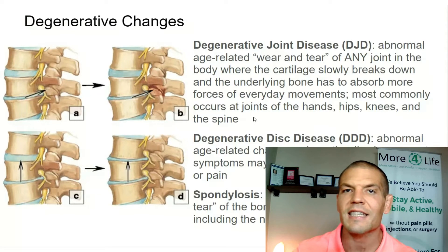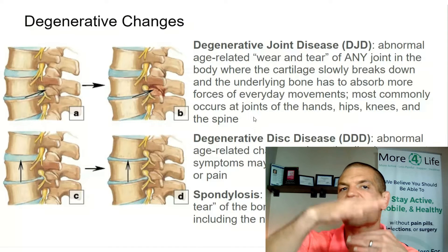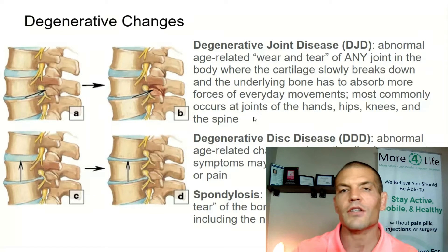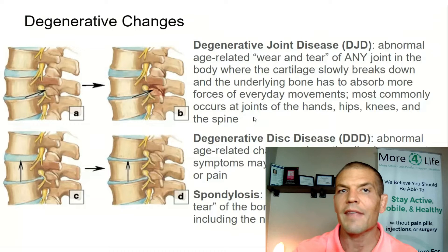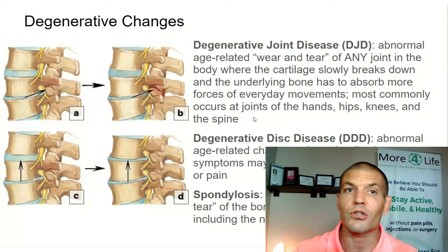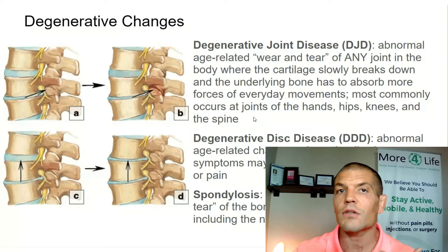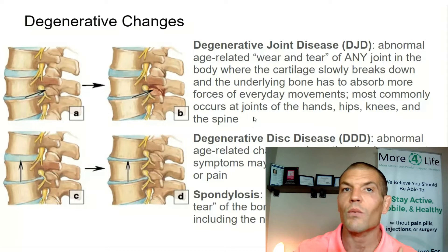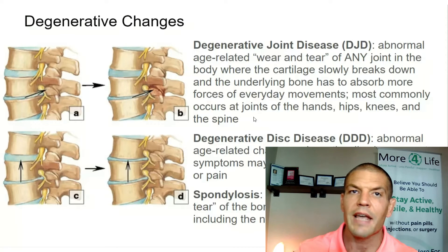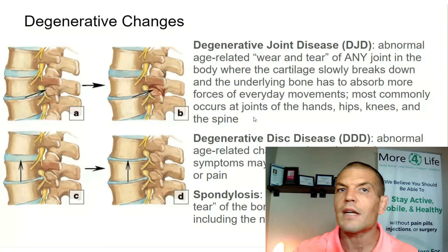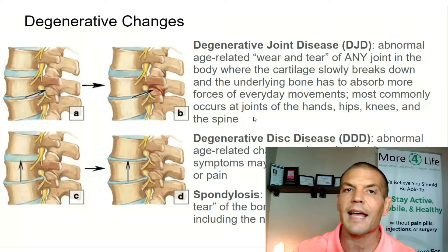Degenerative disc disease is basically the same thing, but with the discs between the vertebrae. You start to lose height in those discs, which can jam the joints together — so often when you have one, you have the other as well. It can also narrow the spaces where the nerves exit the spine, which are the little yellow things you see in the pictures.